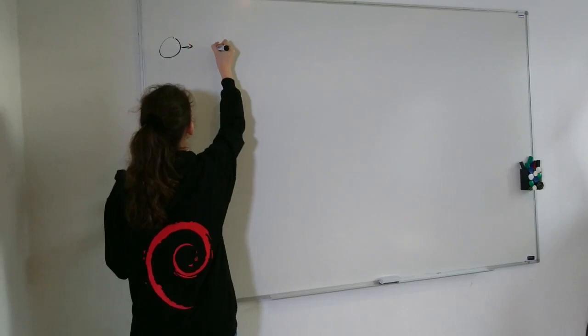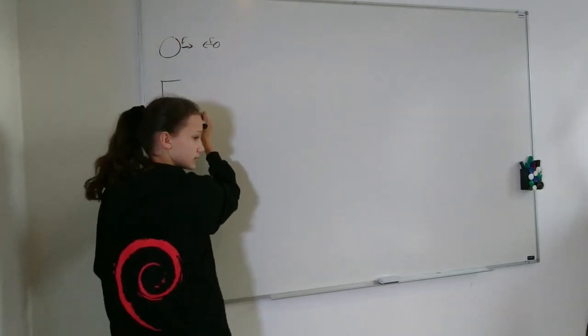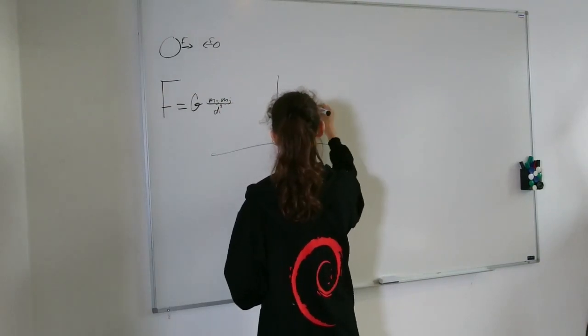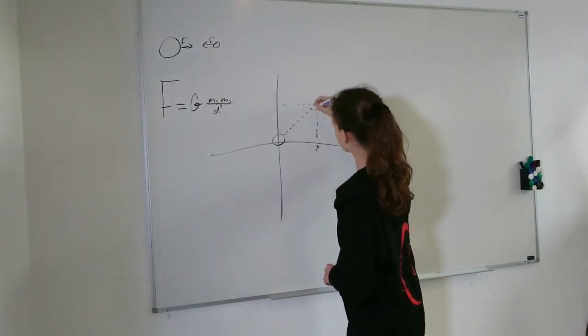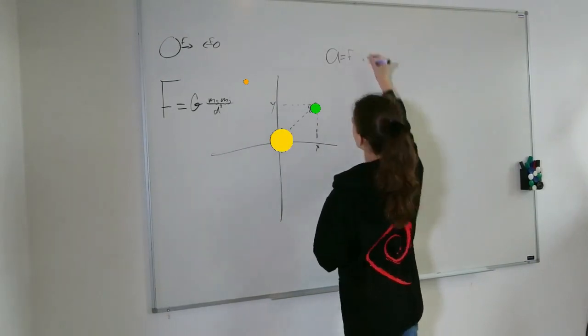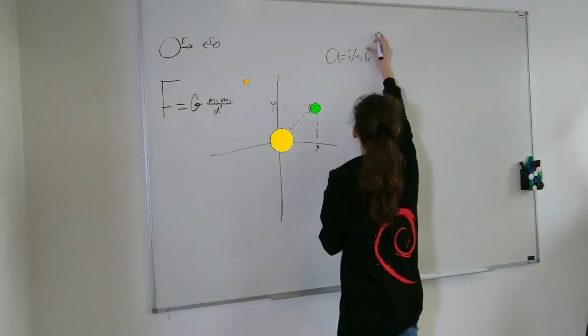First we look at the law of gravity. It says that two bodies, for instance the earth and the sun, attract each other with a force F which equals G multiplied by the mass of the sun multiplied by the mass of the earth divided by the distance squared.